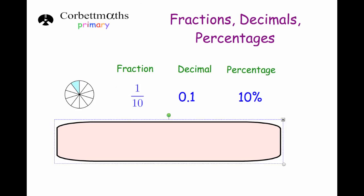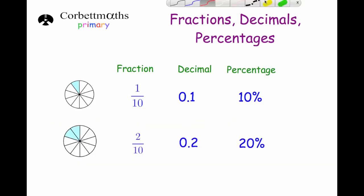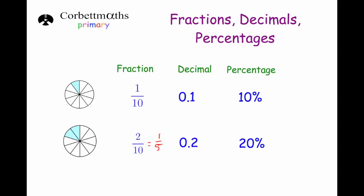Our next one is two tenths. Each section is 10%, so two of them is 20%. We've already seen this because two tenths, dividing both numbers by two, gives us one fifth. So two tenths is the same as one fifth — 0.2 and 20%.